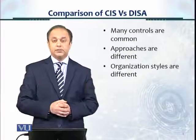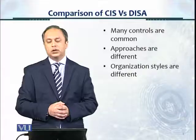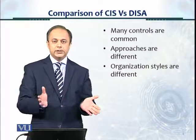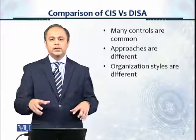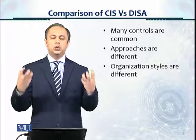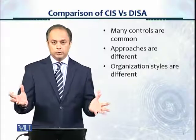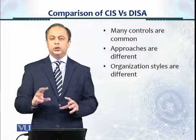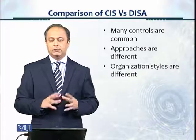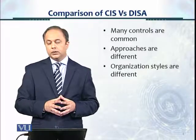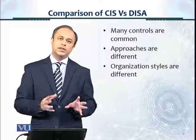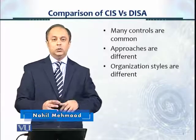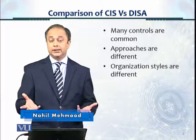Welcome. This is a very important module, and it gives you a comparison of Center for Internet Security, CIS, and DISA Controls. These are the main two organizations. Both of them belong to the U.S. and both have something to do with Homeland Security or the military. We're going to compare and contrast the advantages and disadvantages, and who should select CIS and which type of organization should select DISA.